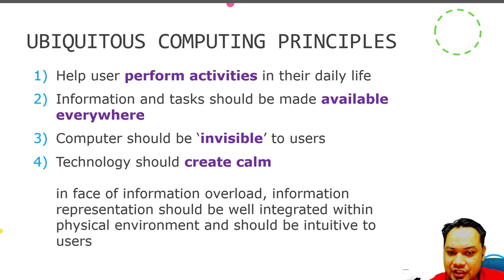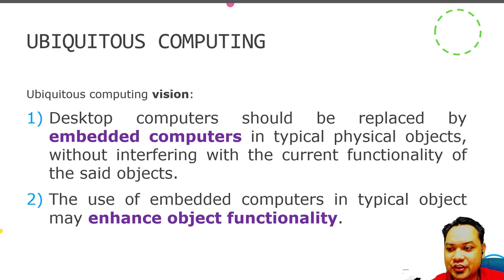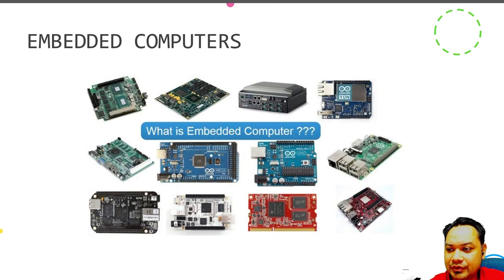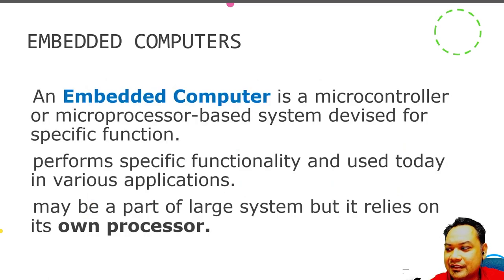In the Ubiquitous Computing vision, the desktop computer can be replaced with an embedded computer integrated inside the object. The use of an embedded computer in a typical object should enhance that object's functionality. Examples of embedded computers include SBCs — Single Board Computers — as well as NodeMCU, ESP-based microcontrollers, Arduino boards, and Raspberry Pi. You can program these embedded computers inside your own project to create much more user-friendly devices.